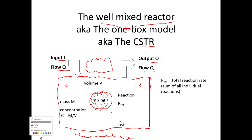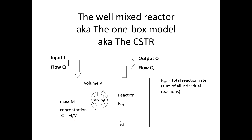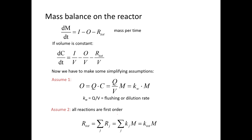If the volume of your box isn't changing, then the flow Q going in has to equal the flow Q coming out. There's going to be some input of your chemical and some output, I and O. Within the box, the idea is that the whole thing is well-mixed — the concentration is the same everywhere. Within the box, you'll have some mass of your chemical, and there may or may not be some loss due to reactions.